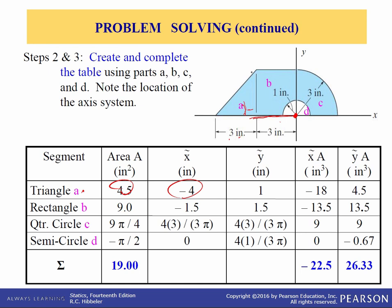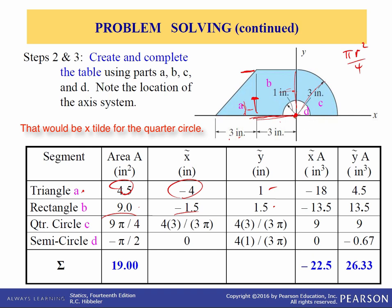Y-tilde for segment A: it's three inches high, so y-tilde is one-third of that, or one inch. Rectangle B has an area of three by three, so nine. X-tilde for B is half the base, minus 1.5, and y-tilde is half the height, 1.5. For quarter circle C: area is pi R squared over four, with R equals three inches, so nine pi over four. X-tilde is four times R divided by three pi, with R equals three. Y-tilde is likewise four R over three pi.